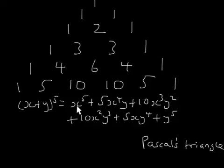So going back to x plus y to the power of 5, it's x to the power of 5 plus 5x to the fourth y plus 10x cubed y squared plus 10x squared y cubed plus 5xy to the power of 4 plus y to the power of 5. The numbers 1, 5, 10, 10, 5, 1 are in front of the x's and y's. Remember: x starts at x to the power of 5 and goes down — x to the fourth, x cubed, x squared, x to the power of 1, x to the power of 0 — while the y powers creep up from the other end. So that's one way of knowing the coefficients — Pascal's triangle.